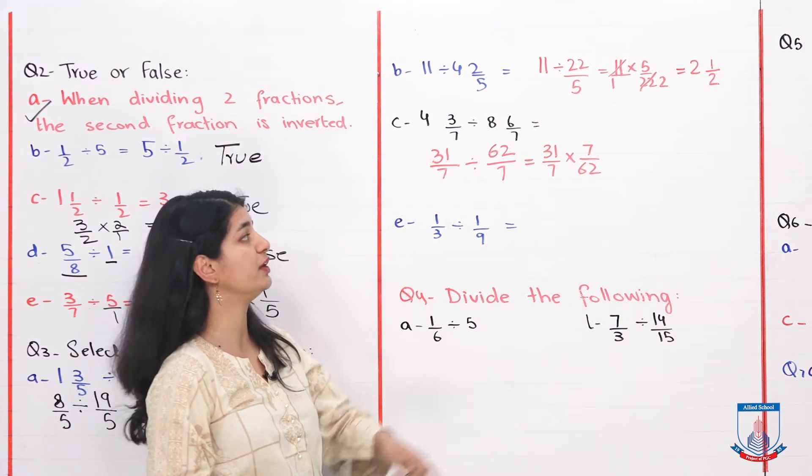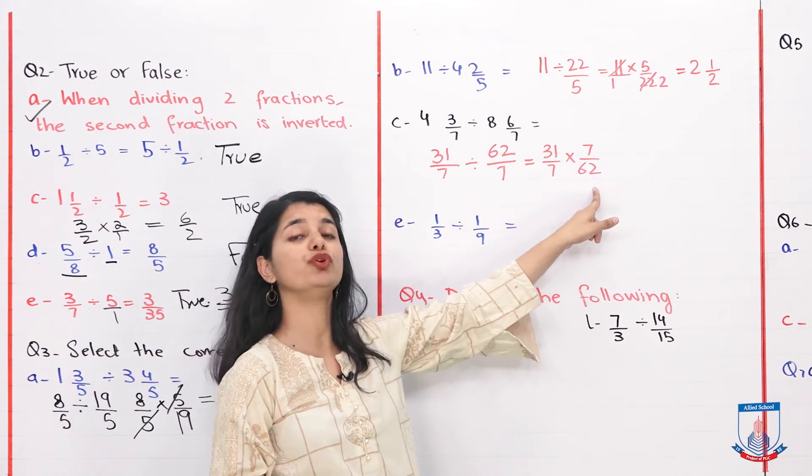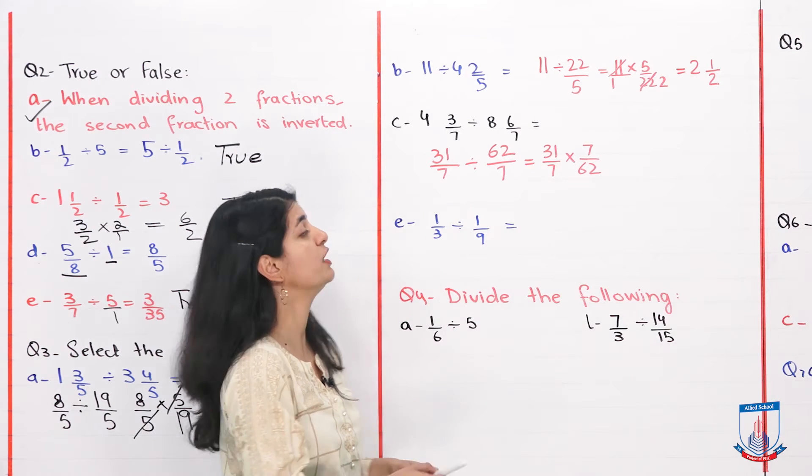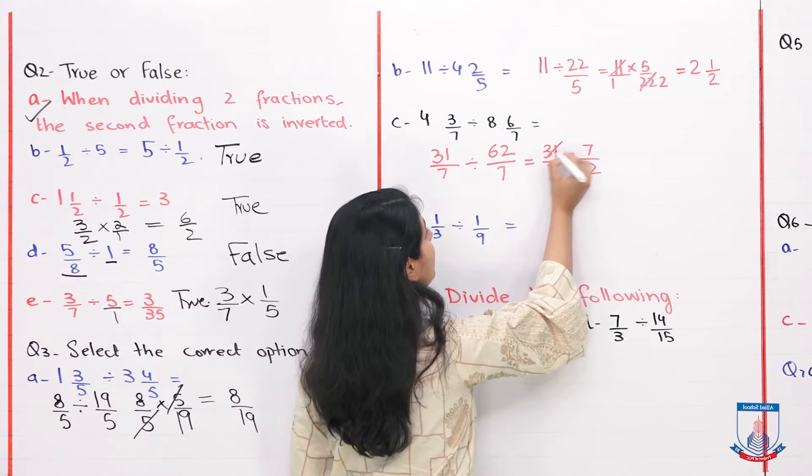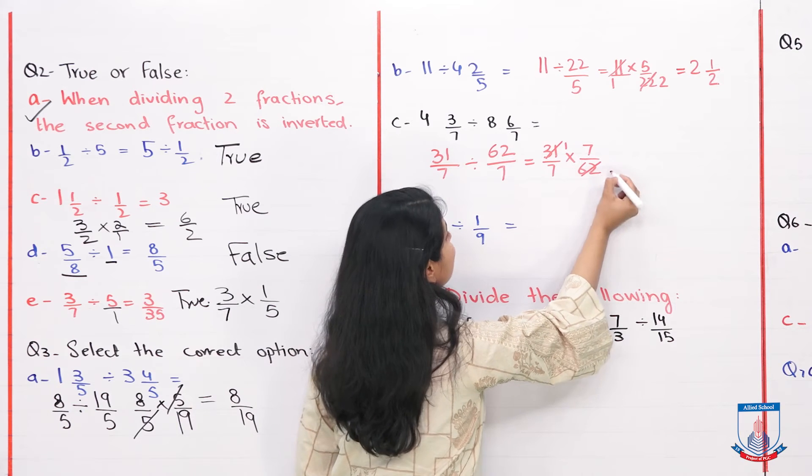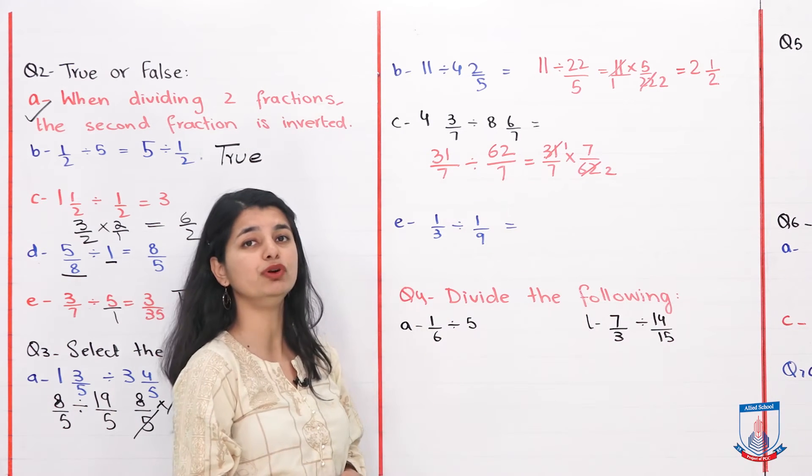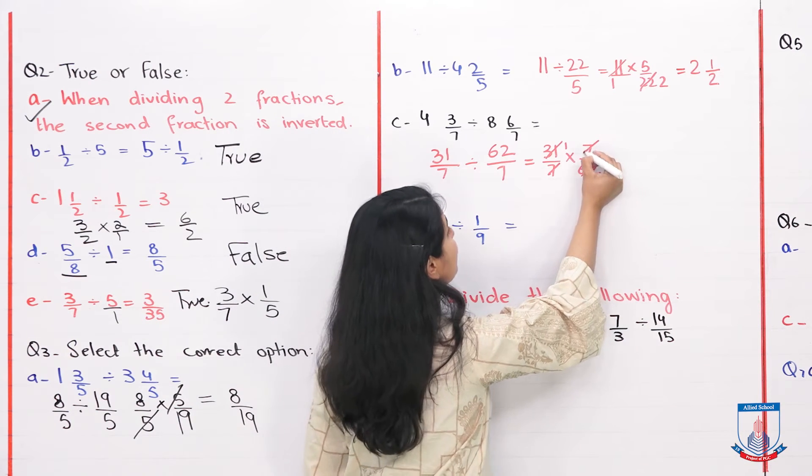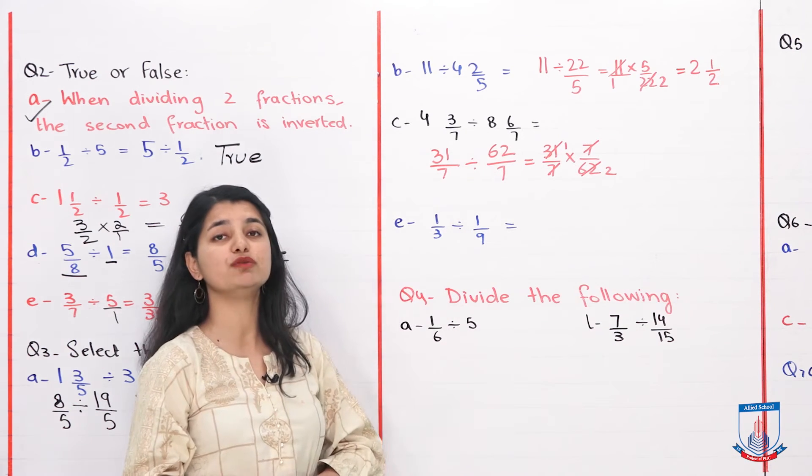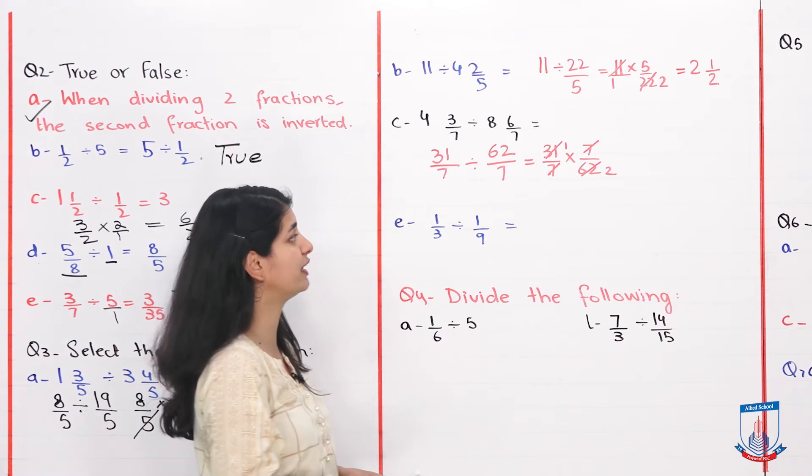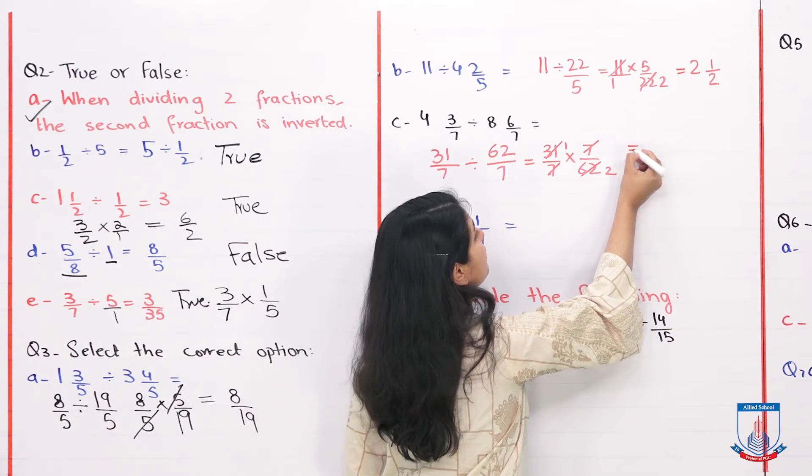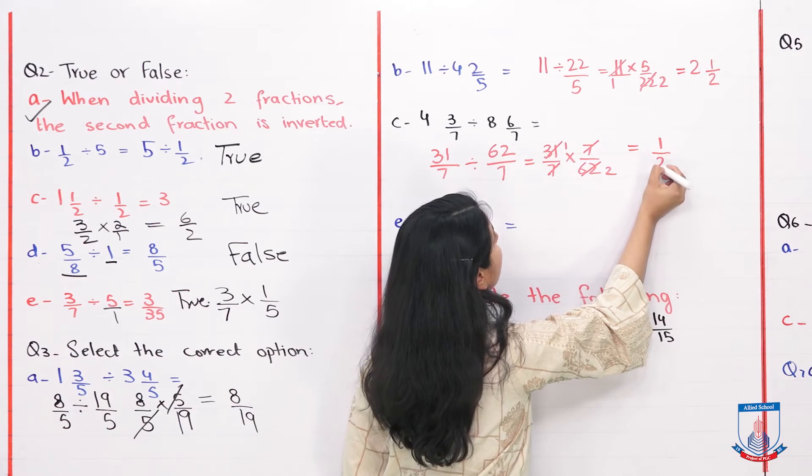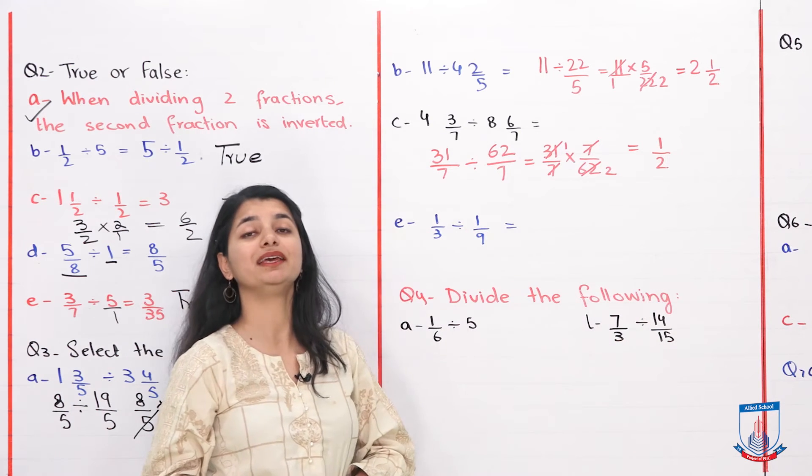Now I can see that 31 and 62 both divide by 31, so we will cancel this, make it 1. Cancel this, 62 divided by 31 is 2. We also have 7 and 7, they also cancel out, both divide by 7. The answer left is just 1 over 2, so this is your correct option.